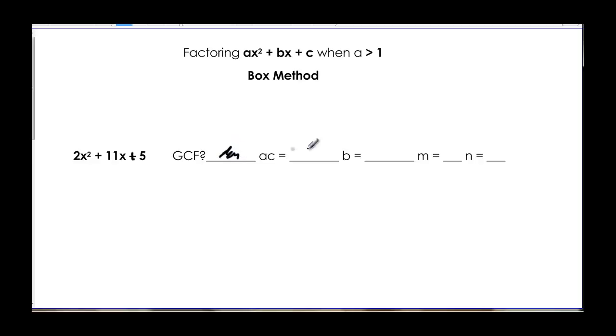Greatest common factor? No, we don't have any. AC was 10, B was 11, and we actually already know that M is 10 and N is 1.